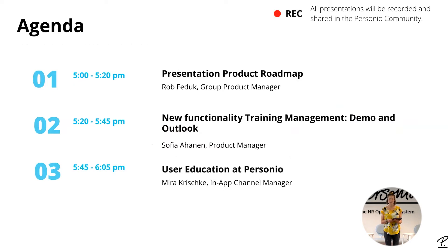What's happening today? Let's have a look at our agenda. We will shortly start with our first talk, presented by Rob. Rob will talk about our product roadmap and share some insights on what features will be presented and developed in the next couple of months. After Rob, Sophia will join and give you a demo and an outlook on current features regarding talent management. Last but not least, Mira will talk about user education at Personio and how you can learn tricks for self-help and navigate our Personio Help Center.